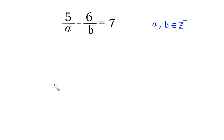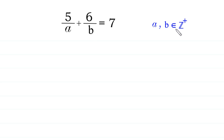Hello, welcome to how to solve this very nice equation: 5 over a plus 6 over b is equal to 7, where a and b are positive integers.